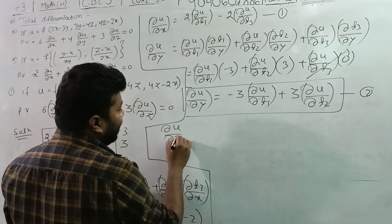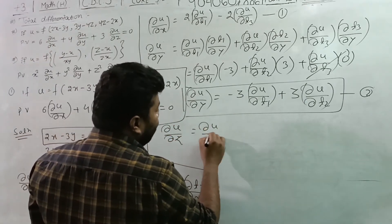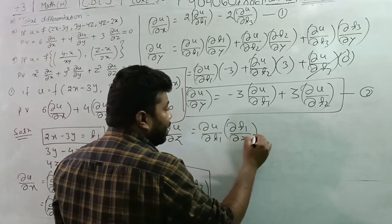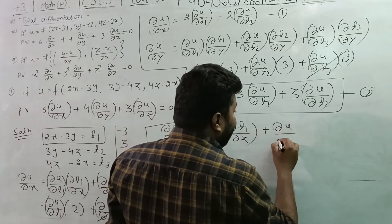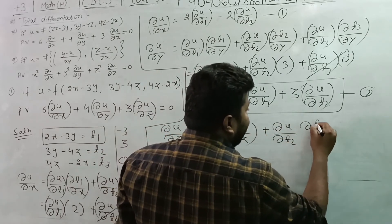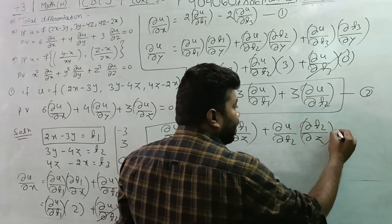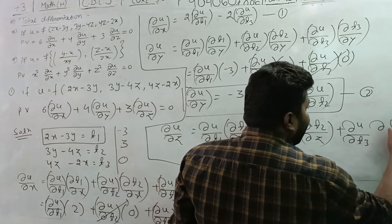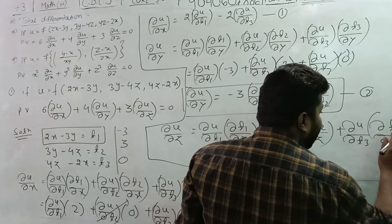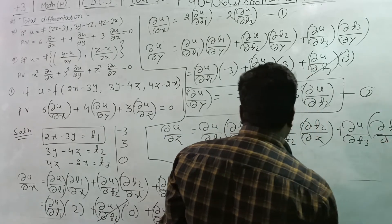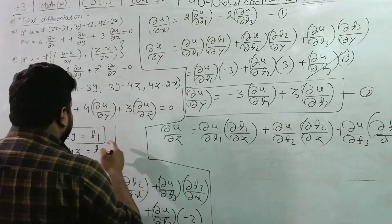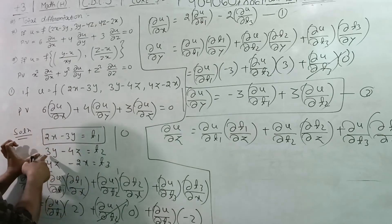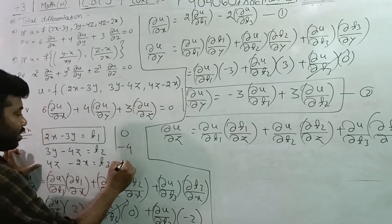With respect to z: del u by del z equals del u by del t1 times del t1 by del z, plus del u by del t2 times del t2 by del z, plus del u by del t3 times del t3 by del z. Del t1 by del z is 0, del t2 by del z is minus 4, and del t3 by del z is 4.